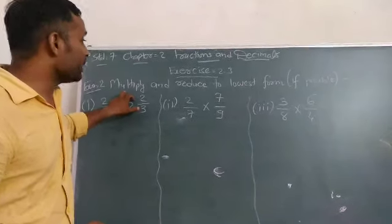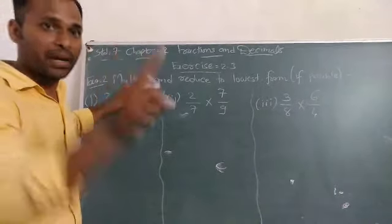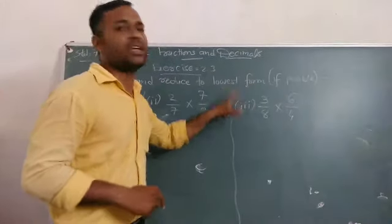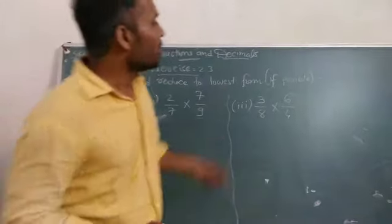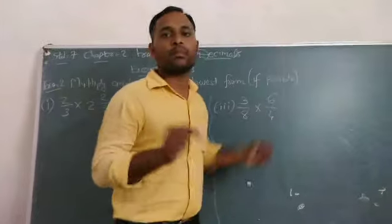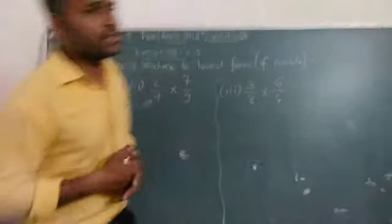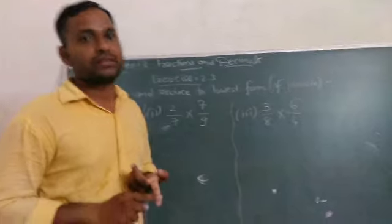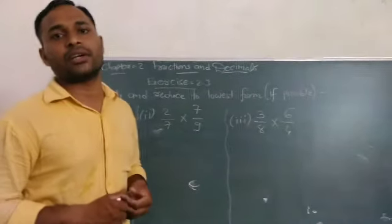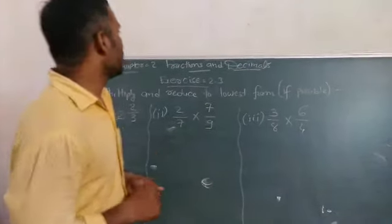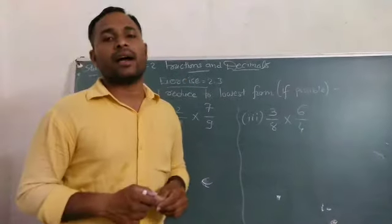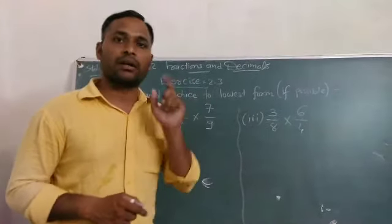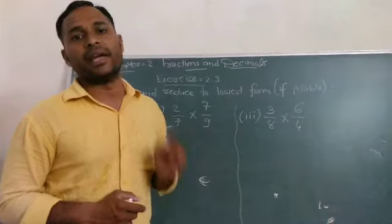Your first question is Multiply, and last, Reduce to Lowest Form. Lowest form means simplest form. In fact, if possible. What's this really mean? If you got the answer in proper fraction, you can't convert it into mixed fraction. But if you get answer in improper fraction, you can convert it into mixed fraction.